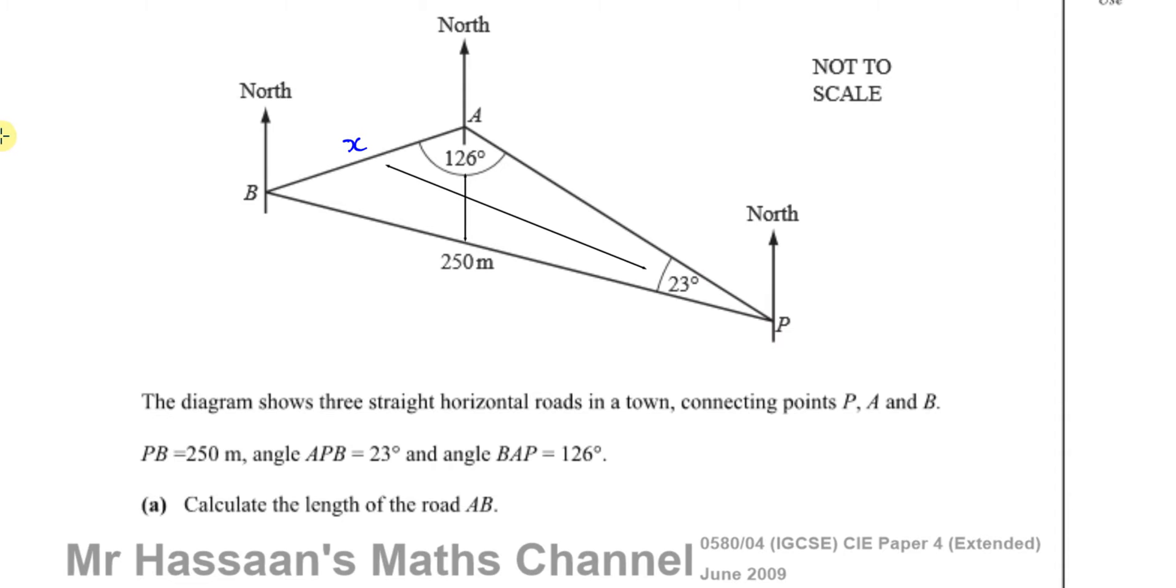The sine rule is basically: in any triangle, whether it's right angled or not, the ratio of the sine of the angle and the side opposite the angle will give you the same ratio for any of the three pairs of sides and angles.